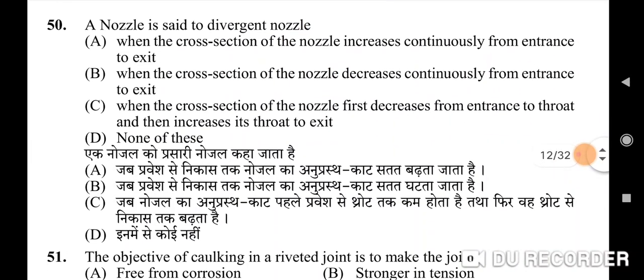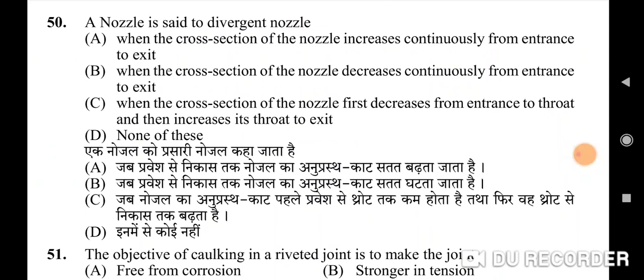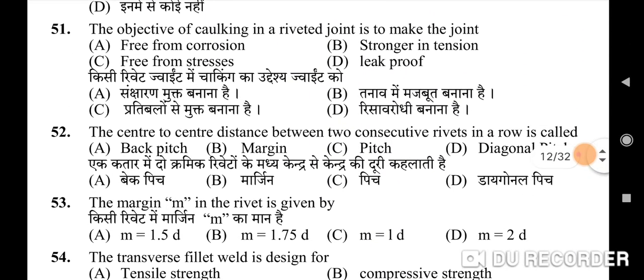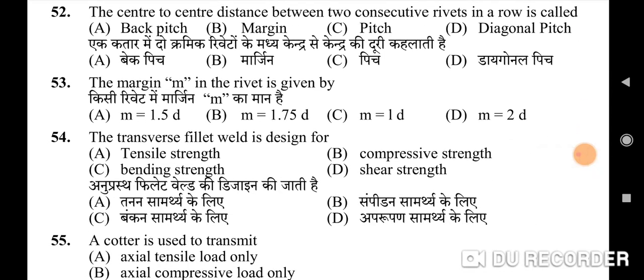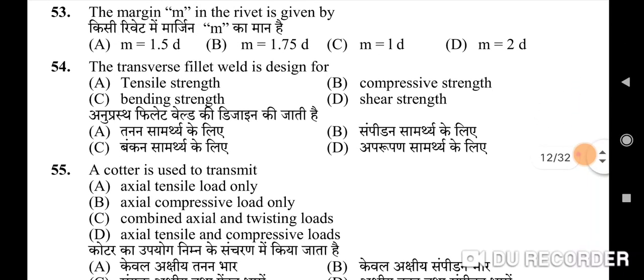Fiftieth question: a nozzle is said to be a divergent nozzle — correct option is A: when the cross-section of the nozzle increases continuously from entrance to exit. Fifty-first question: the objective of caulking in a riveted joint is to make the joint — correct option is D: leak proof. Fifty-second question: the center-to-center distance between two consecutive rivets in a row is called — correct option is B: margin.